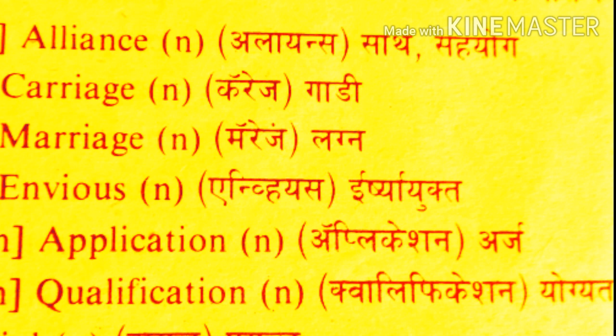Alliance — saath, kima sahayog. Carriage — gadi. Marriage — lagna. Envious — irshayukta. Application — arza. Qualification — yoghata.